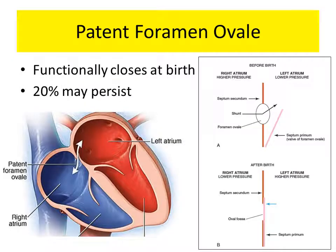Patent foramen ovale: the foramen ovale is located at the lower end of the septum secundum. Before birth, since the pressure on the right side is more and the left side is less, there is a flow of blood from right to the left. But after birth, once the lung starts functioning, the higher pressure on the left side will oppose the lower flap with the higher one, closing it functionally at birth. In some 20% of people, it may not close totally, resulting in what is called a patent foramen ovale. Most of the time, it is asymptomatic.